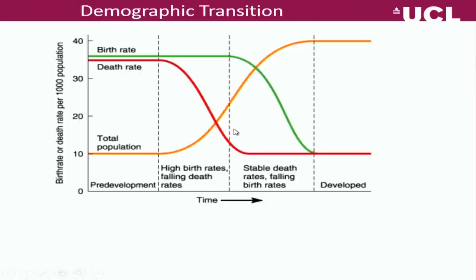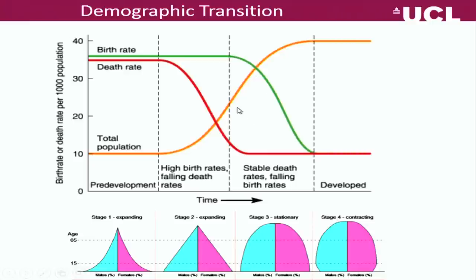Note that as the fertility rate has already come down, population growth is still increasing — because the improvements in survival a few years earlier mean there are many more young people having children. The age structure changes too: initially you have a pyramid with lots of young children but few elderly. As the death rate falls, more people survive and you get a big bulge in the working-age population. Then as fertility falls, there are fewer children and you get an older population with a higher proportion of elderly.